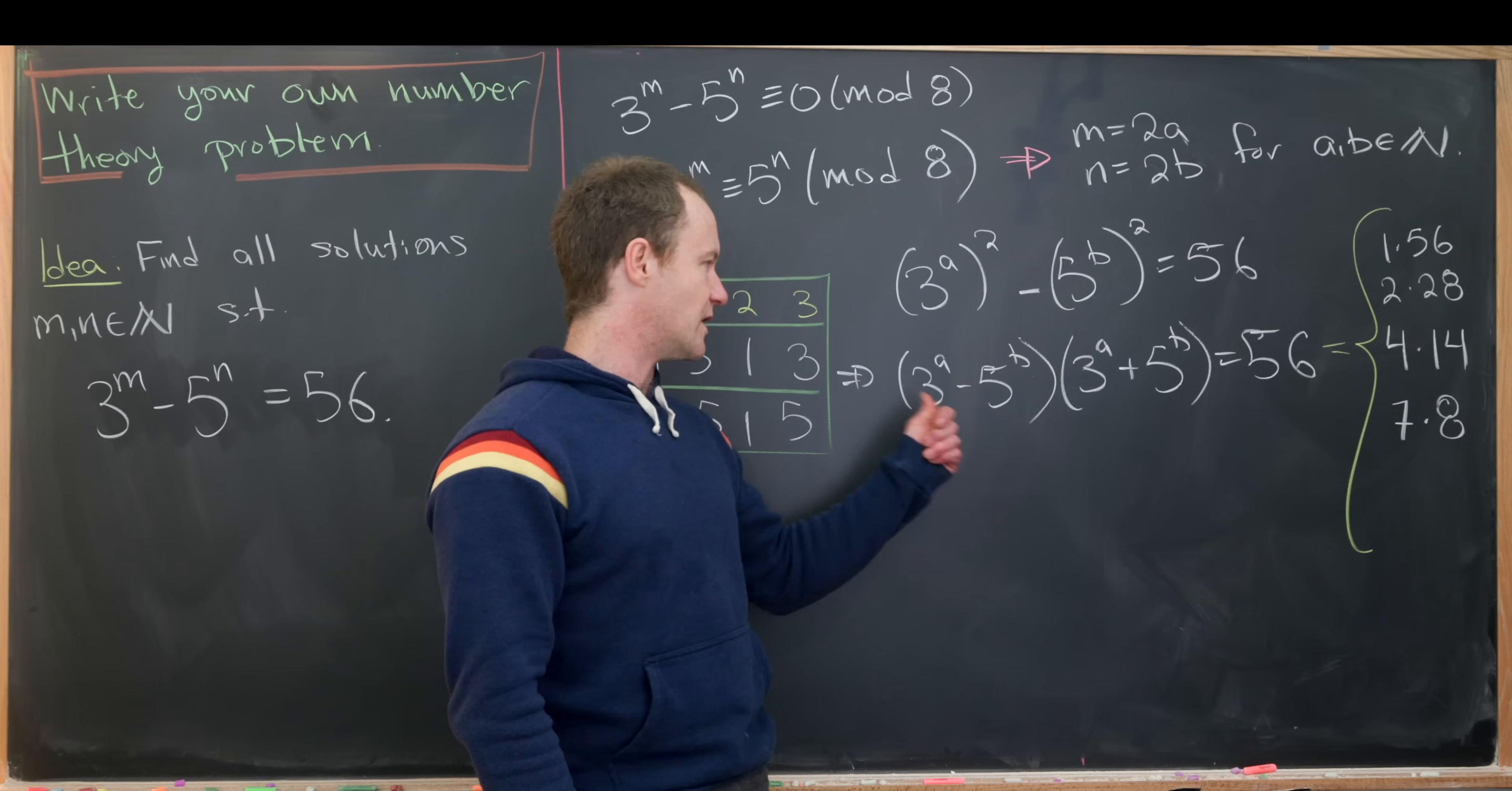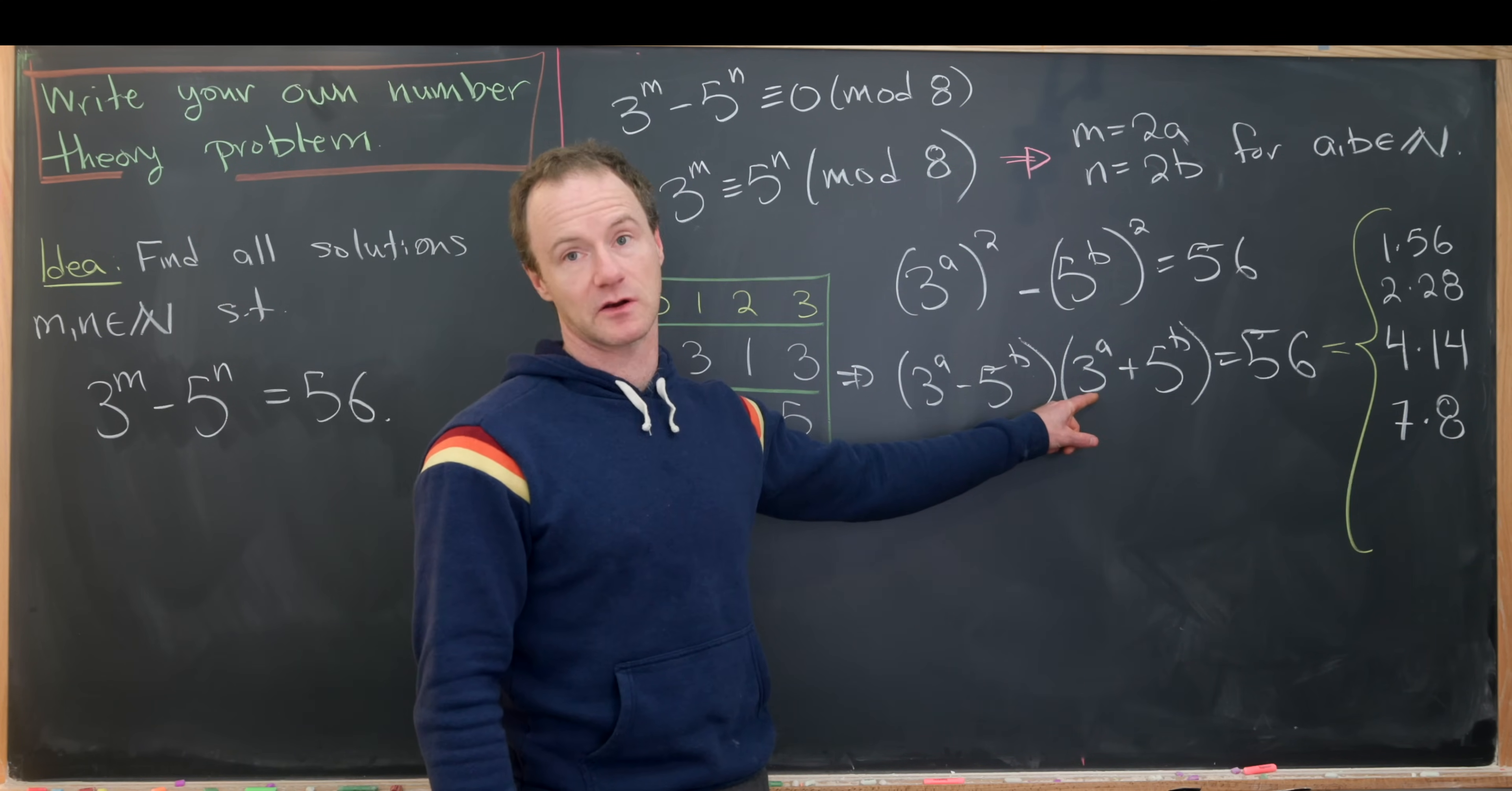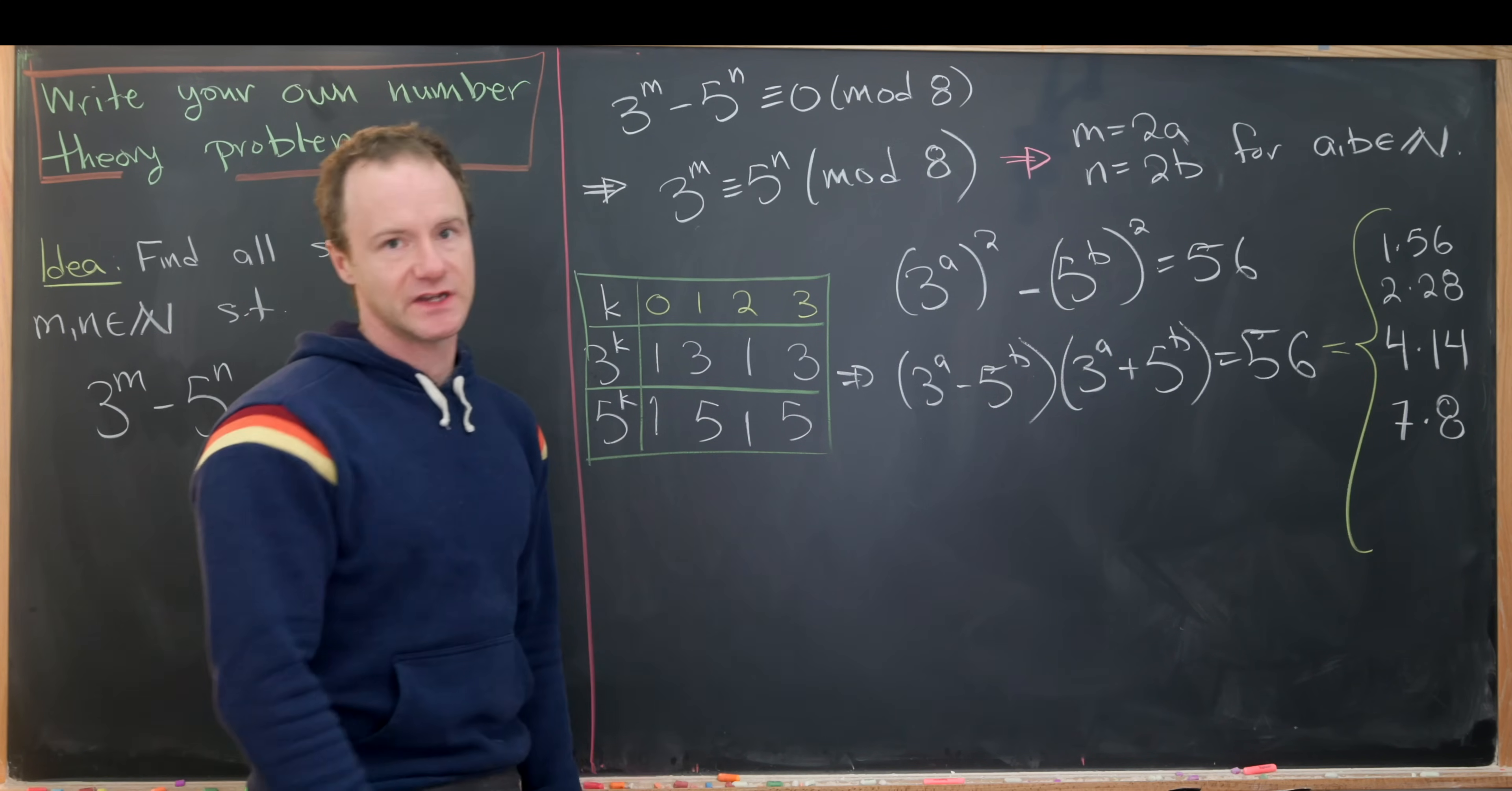Furthermore, we know that 3 to the a plus 5 to the b is always positive. Our result is always positive, which means this is always positive right here. But this term being always positive means that it is less than this term. That tells us that 3 to the a minus 5 to the b is playing the role of the first column in this factorization, and the 3 to the a plus 5 to the b is playing the other role.